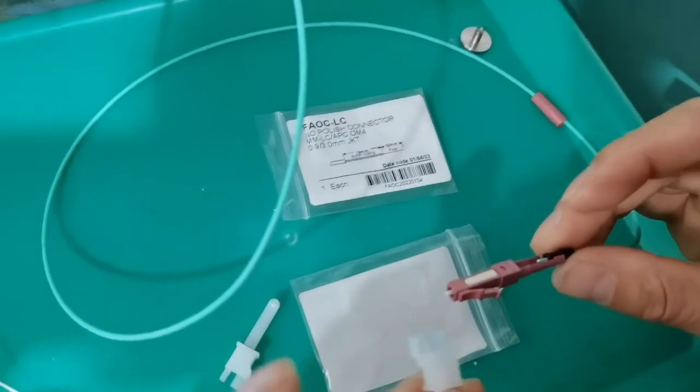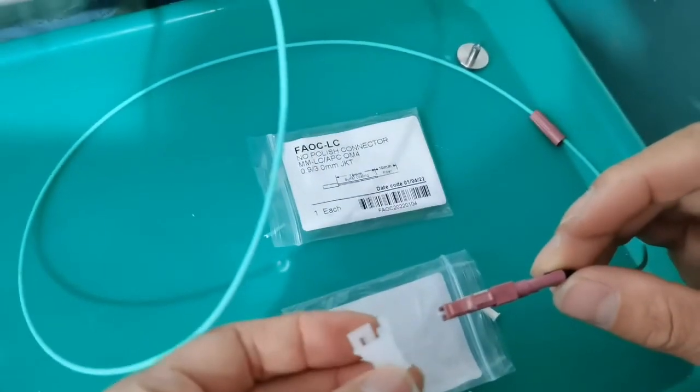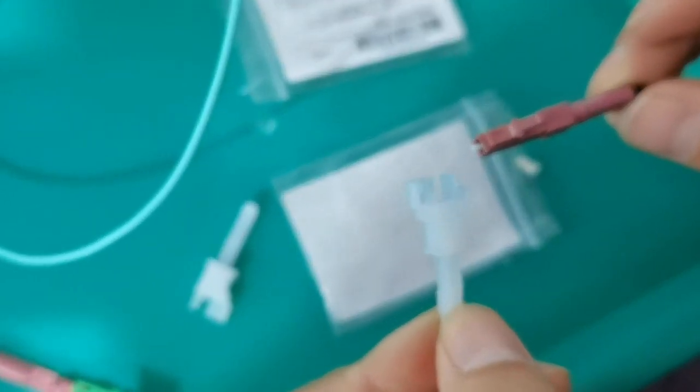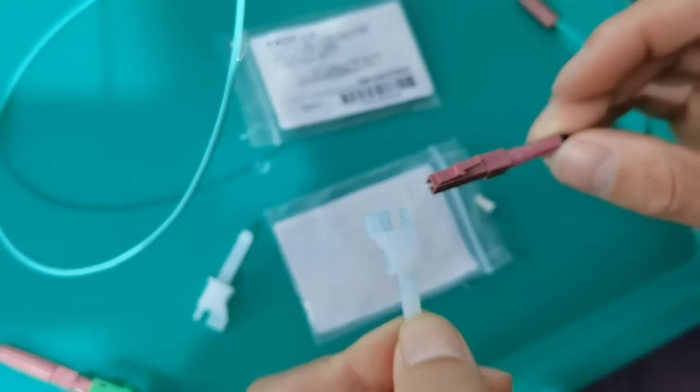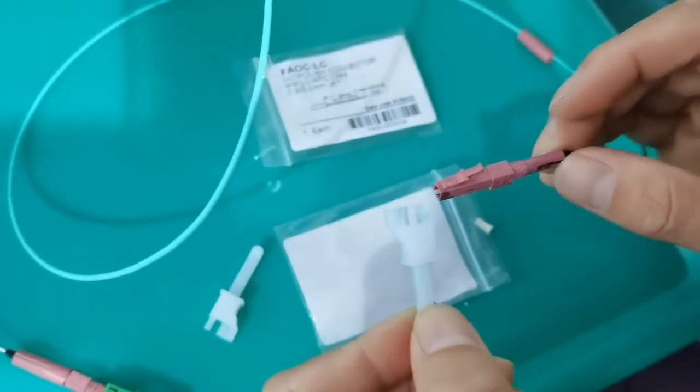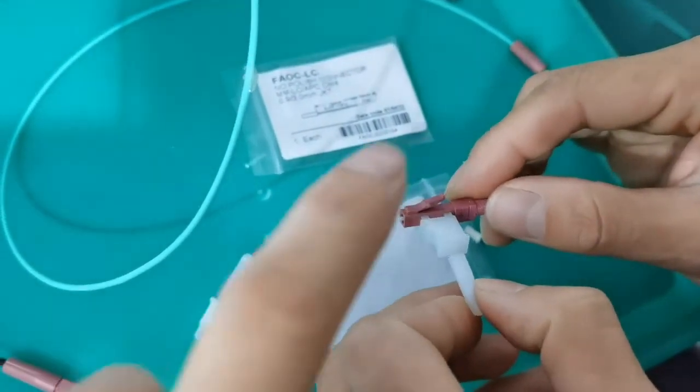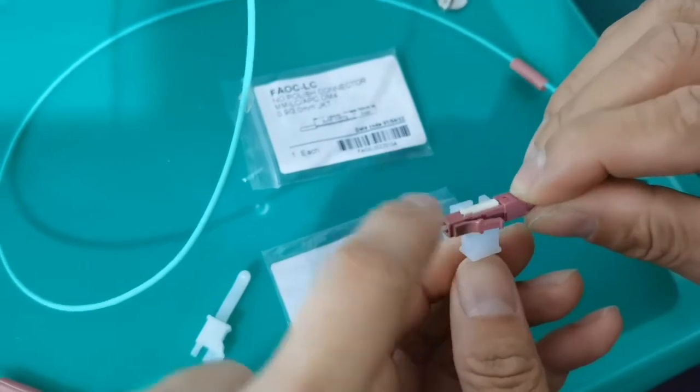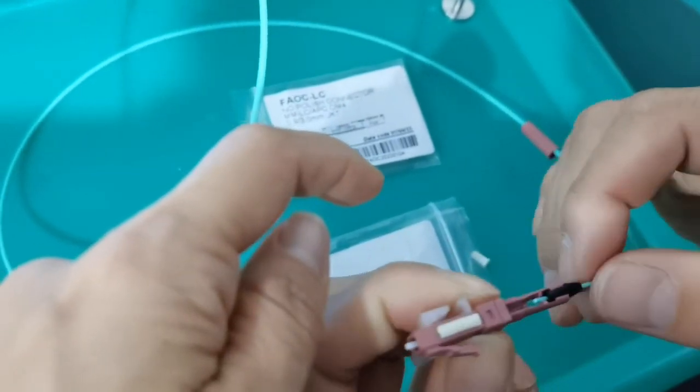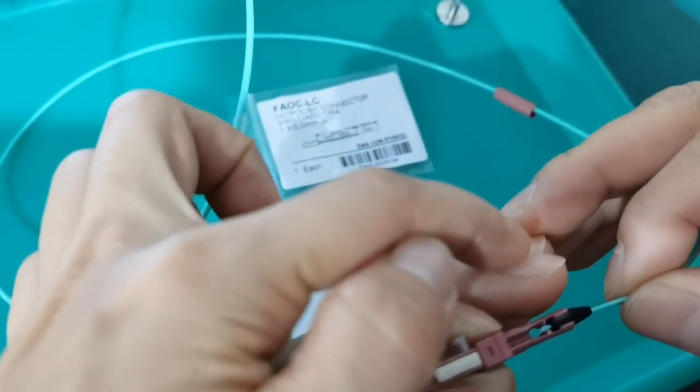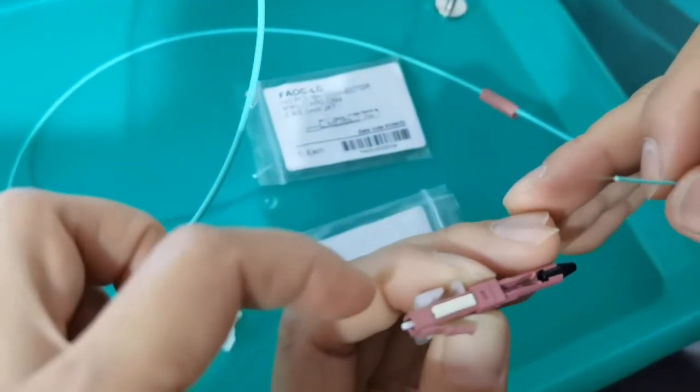If you want to repeat use this FASTA connector, this cap here is a tool to loosen the V-groove to pull out the fiber. Now our engineer will show. You see this part to push, and then this key is unlocked. Then you can pull out the fiber. The FASTA connector can be used again.